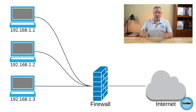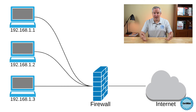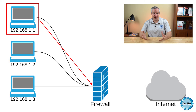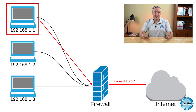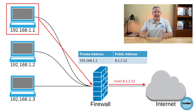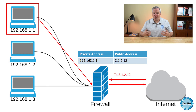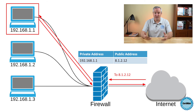Routers and firewalls perform NAT translation at the border of a network. When a system with a private IP address — such as a laptop with private address 192.168.1.1 — wants to communicate on the internet, the NAT device lends the system a public IP address temporarily for that communication. The NAT device records the public and private IP address translation in a table, and when a reply comes in for the public address, the NAT device looks up the corresponding private address in that table and routes the packet to the correct system on the private network.